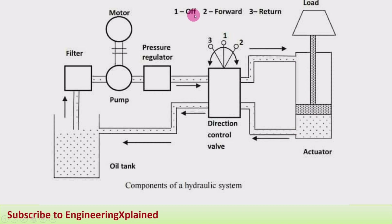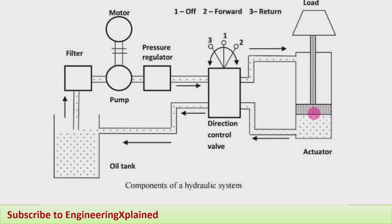Depending on extension or retraction of the piston, the flow of fluid changes — forward and return are shown. A load is applied to the actuator, which is a double-acting piston. Fluid flows to either side depending on the required motion, and during the same time the returning oil goes back to the oil tank.